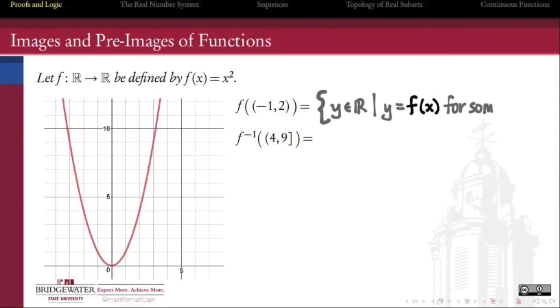Functions not only act on single points, they also act on sets in two different ways. Forward: where if a is a subset of the domain, then f of a is the subset of the range containing the values of f of x for all x in a. This is called the image of a under f.